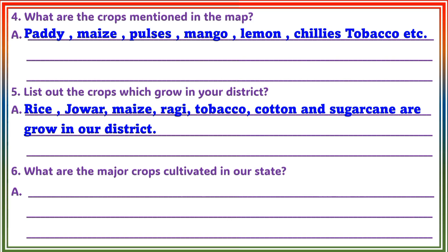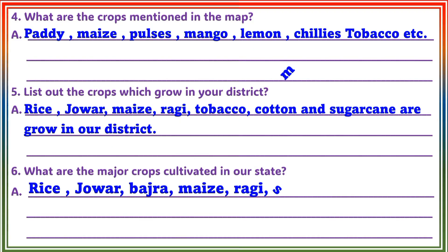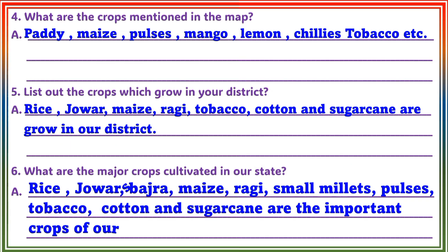Question 6: What are the major crops cultivated in our state? Answer: Rice, Jowar, Bajra, Maj, Raji, Small Millets, Pulses, Tobacco, Cotton, and Sugarcane are the important crops of our state.